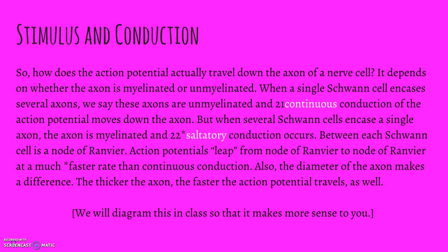How does the action potential actually travel down the axon of the nerve? It depends on whether the axon is myelinated or unmyelinated. When there's a single Schwann cell that encases a group of several axons, we say those axons are unmyelinated, and a continuous conduction of action potential moves straight down the axon. But if several Schwann cells encase a single axon, then this axon is myelinated and saltatory conduction occurs. Between each Schwann cell is a node of Ranvier, and action potentials leap from node of Ranvier to node of Ranvier at a much faster rate. Also, the thicker the axon, the faster the action potential can travel.